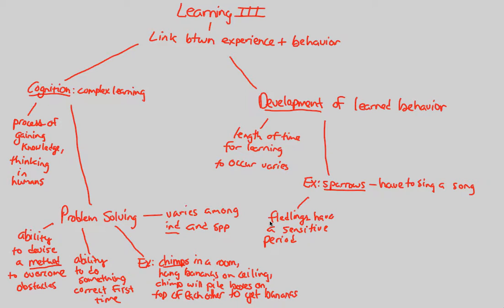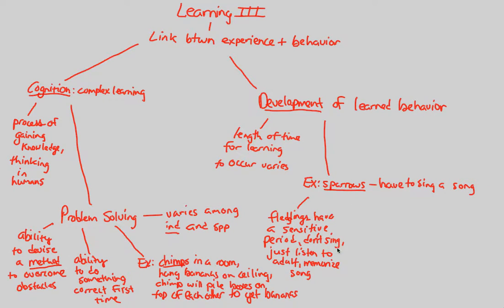During the sensitive period of about 50 days, fledglings actually don't sing. All they do is listen to the adult sparrow, over and over again, and memorize the song. This is the first phase of development: the young sparrow just listens, does not sing, and memorizes the song over approximately 50 days.